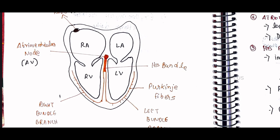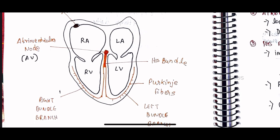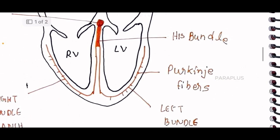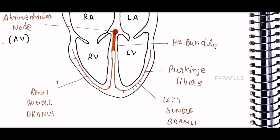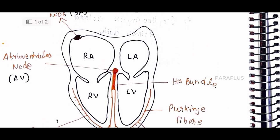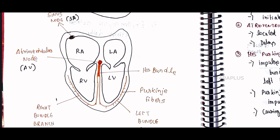The signal is then divided via a branch — the His Bundle. The His Bundle divides into two: the Right Bundle Branch and the Left Bundle Branch. These are further divided into fibers called Purkinje Fibers. The signal is conducted through the Purkinje Fibers, causing ventricular contraction. Then the ventricles relax, and a new signal is generated in the SA node, repeating this process. This is the basic idea.